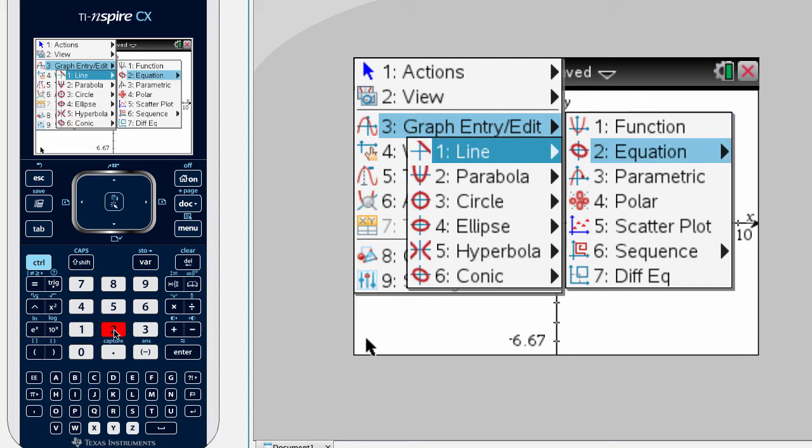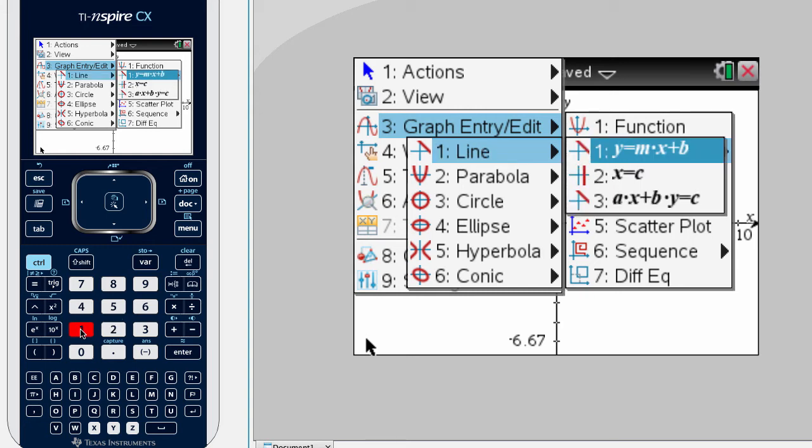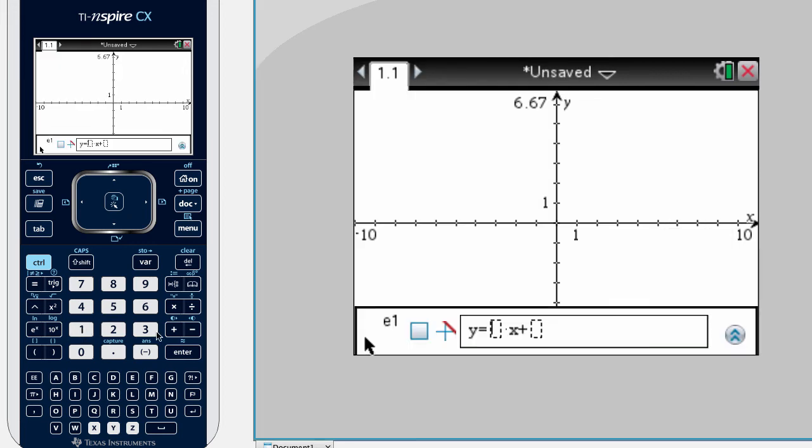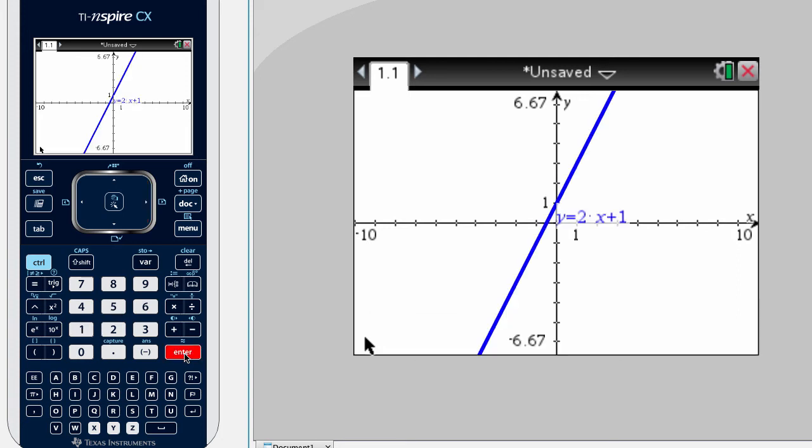and let's stick with lines. So I'm going to select number 1, and then select the first one, which is a line in slope intercept form. So many times you'll see a graph given to you this way, so it's very convenient. You just drop in the numbers, and then hit enter, and graph.